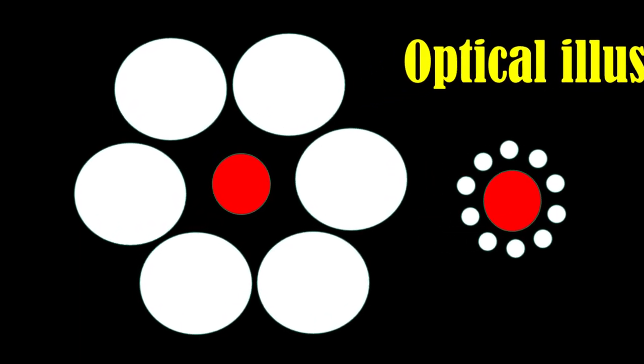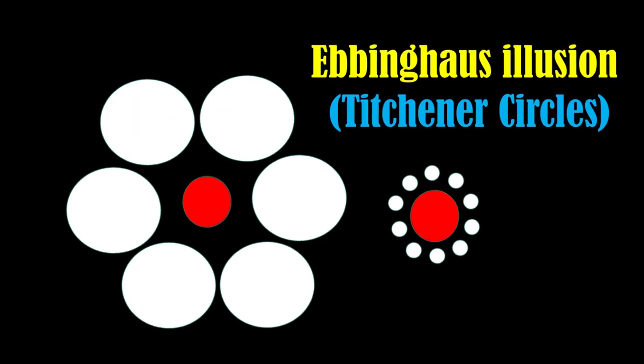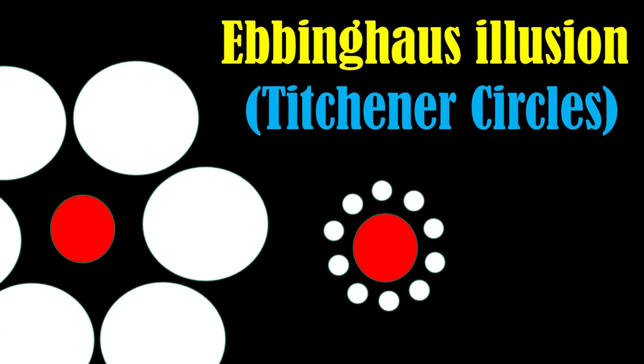Here is a very interesting famous example of optical illusion, known as Ebbinghaus illusion or Titchener circles.